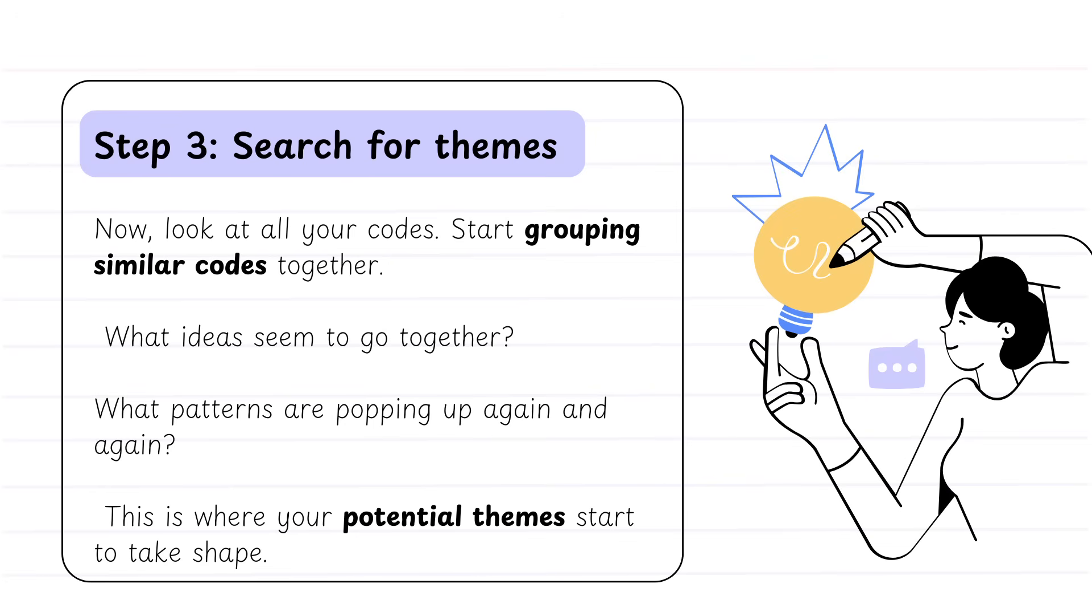Now that we've done this process, now we need to start to search for any potential emerging themes. So are there any codes that are similar that you can potentially group together? Are there any ideas that seem to pop up time and time again? Are they related? And this is where our potential themes start to emerge. So can we start to group some of those codes under a particular heading? And that heading is going to be your new theme.